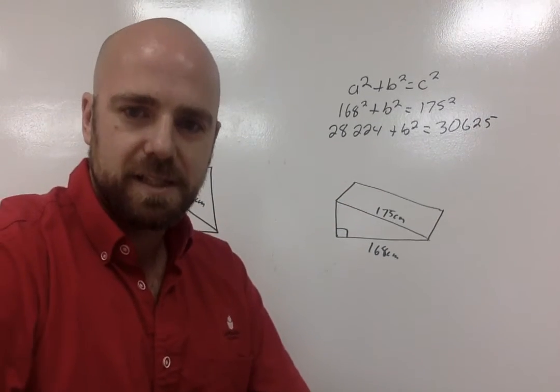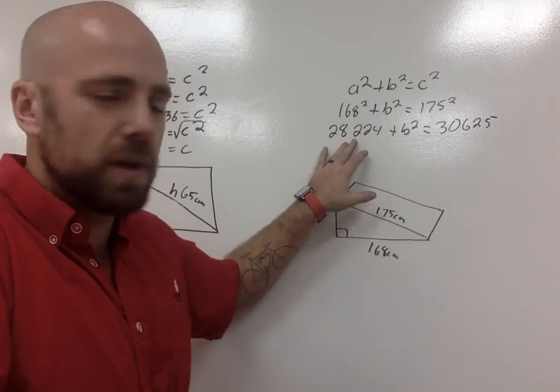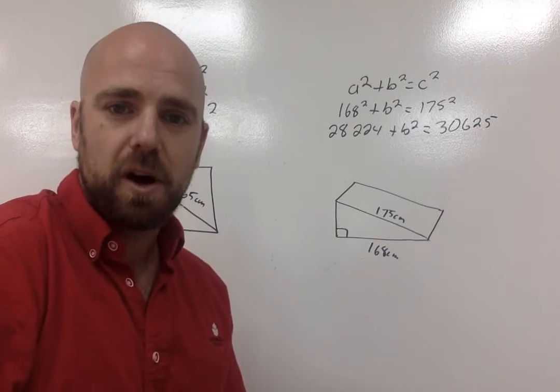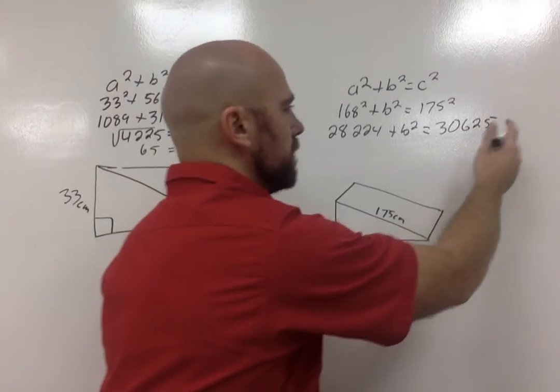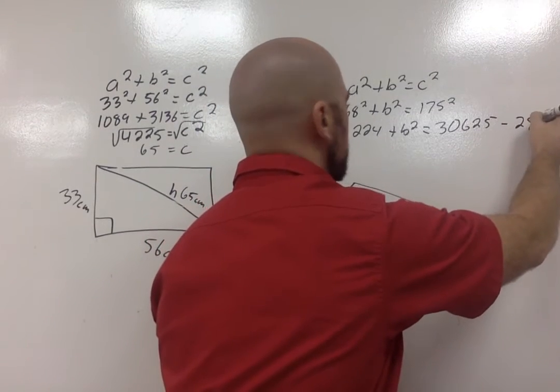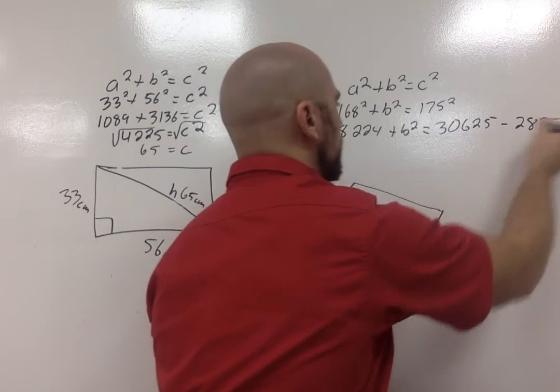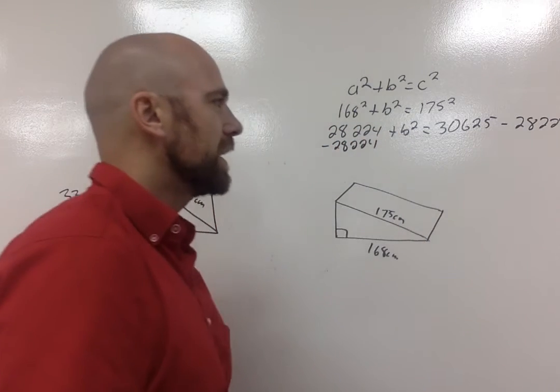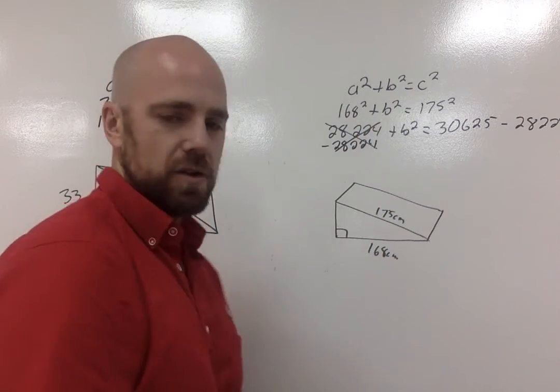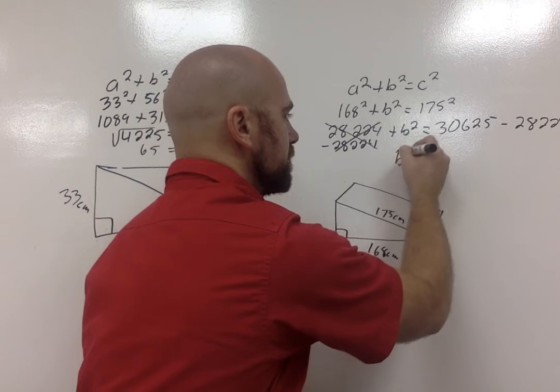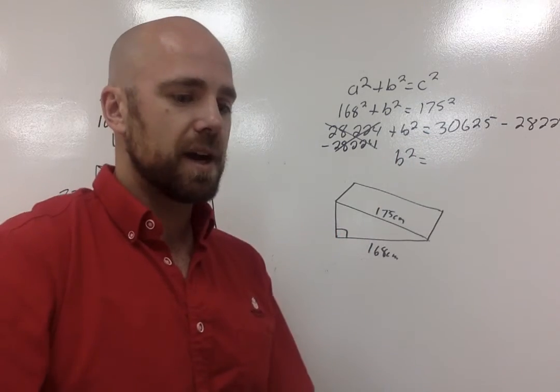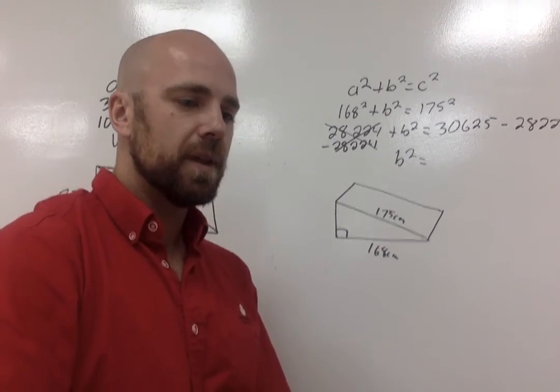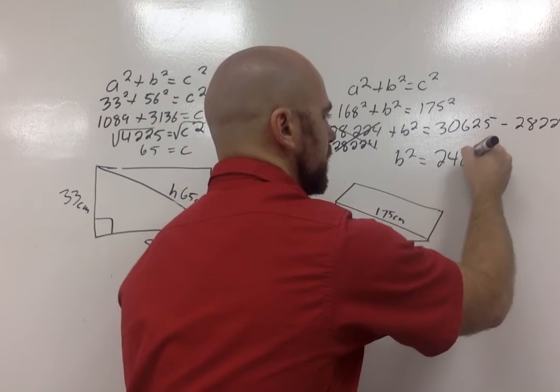Now my goal is to get B by itself. So I'm actually going to take my 28,224, and I'm going to swing it all the way over to the other side. And then, it's going to become its opposite operation. So right now, it's positive. It's going to come over to the other side. And now, I'm going to be subtracting 28,224, and I'm going to be doing the same thing on this side, minus 28,224. Okay, what that does is that eliminates this over here. So now all that I have left on this side is B squared equals, and now I subtract this.